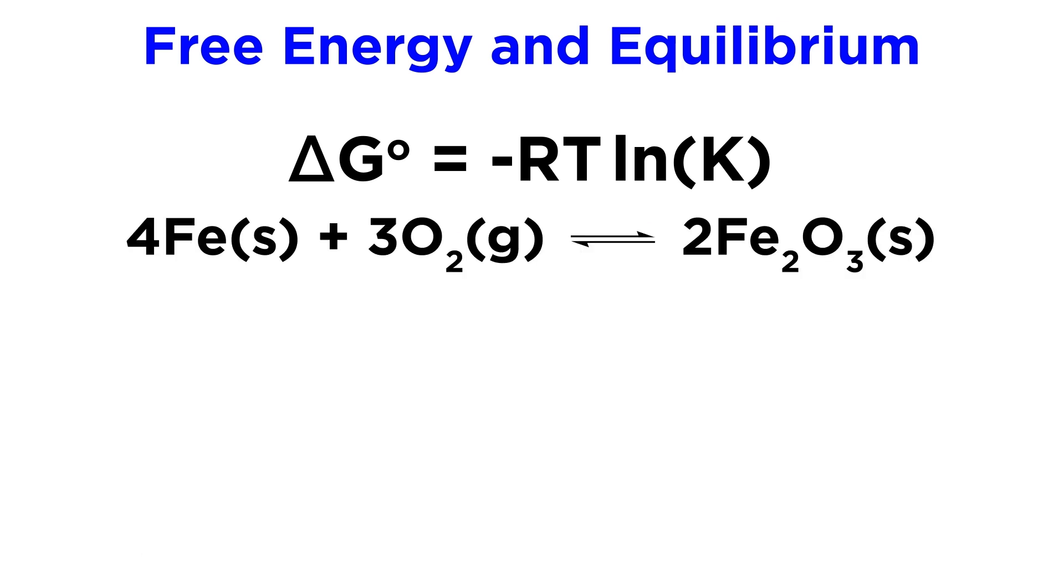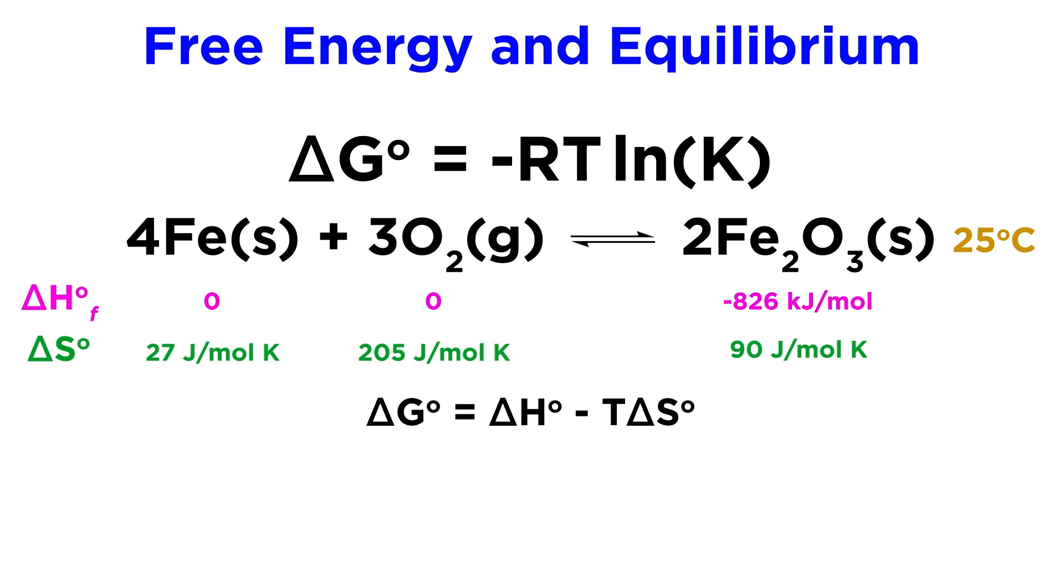This relationship can be useful for solving certain problems. Take this equilibrium involving the oxidation of iron. Given the following enthalpy and entropy data, what is the equilibrium constant at room temperature? Well let's use our new equation and plug in some values. First, we will have to calculate delta G.